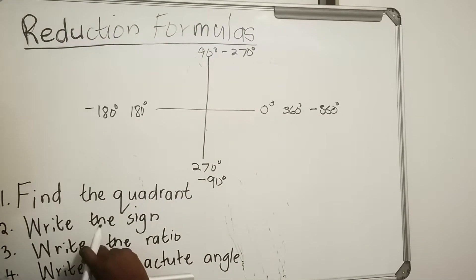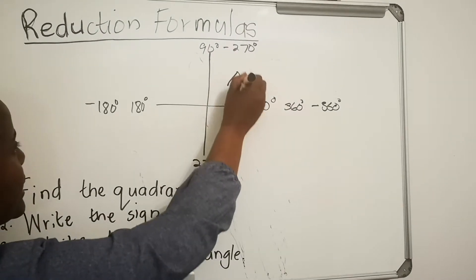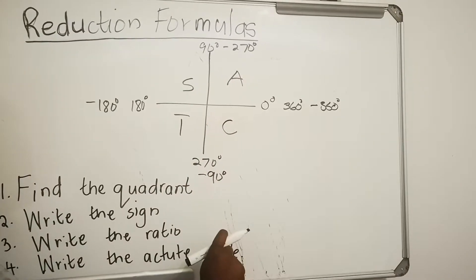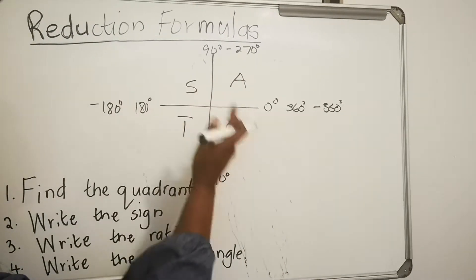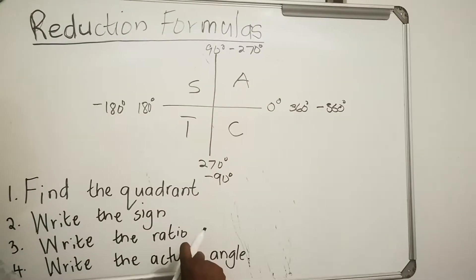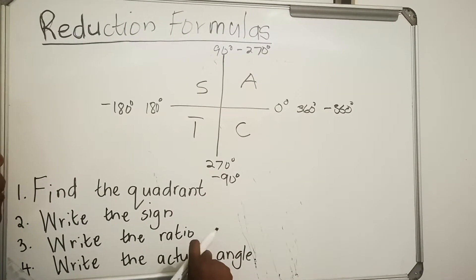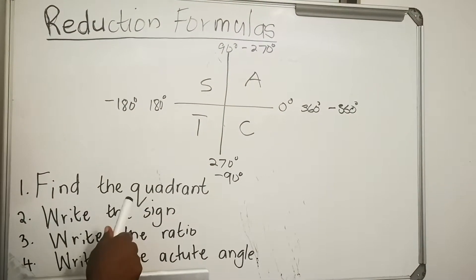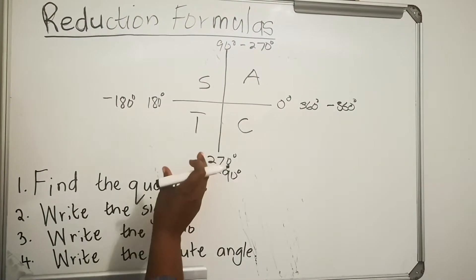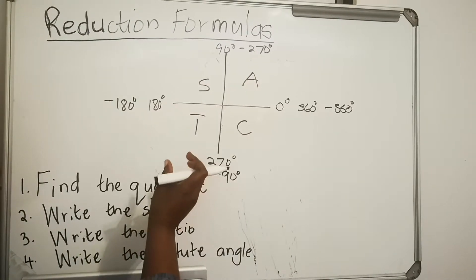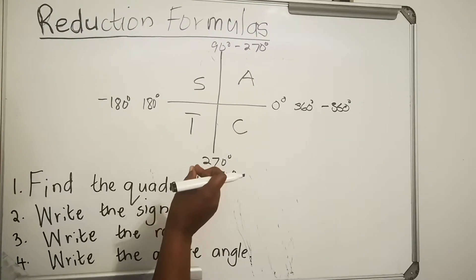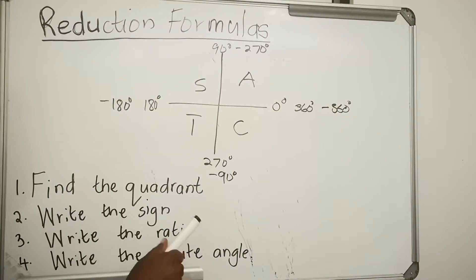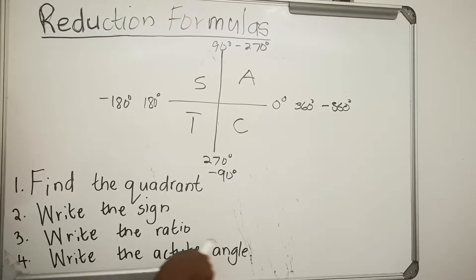This is the first thing that you write. The next thing that you write is 'All Students Take Coffee' — it depends how they taught you in your school, different people use different codes, so write the code you were taught. Then follow these steps: Step one, find the quadrant. Then write the sign relating to the ratio. Then write the ratio. Then write the acute angle.